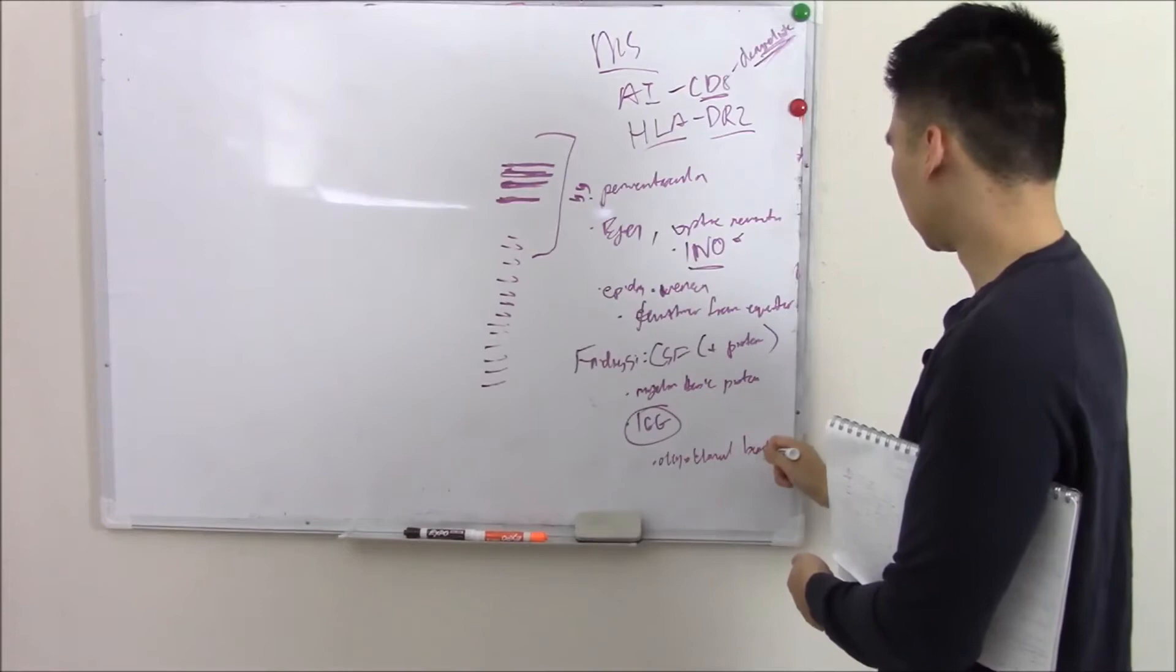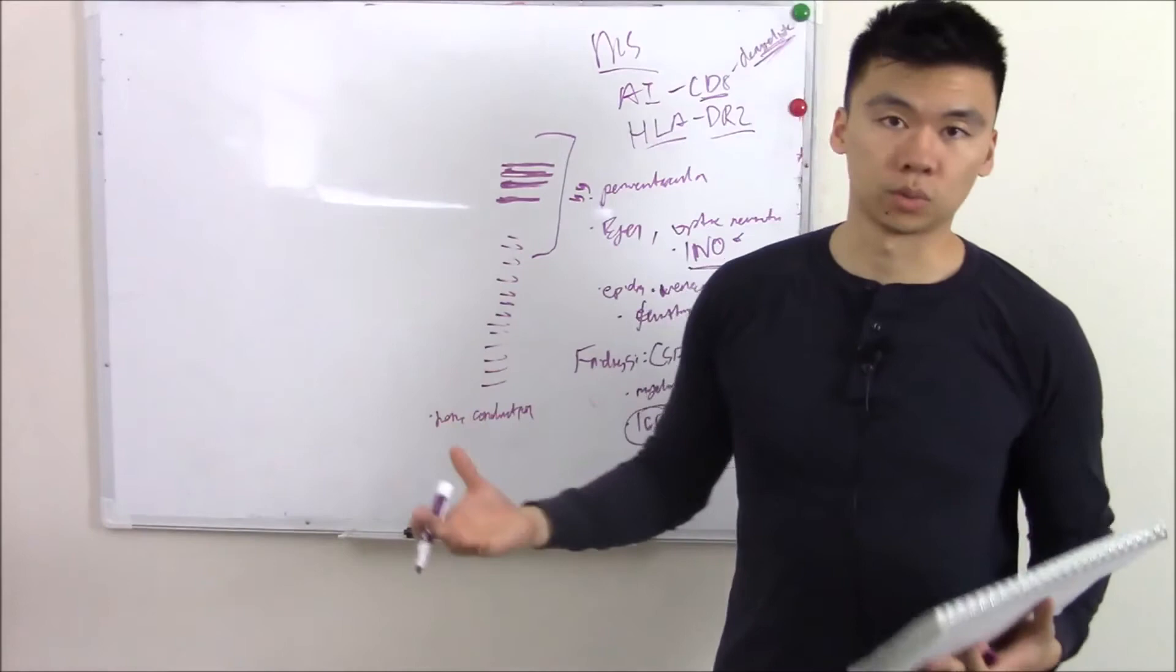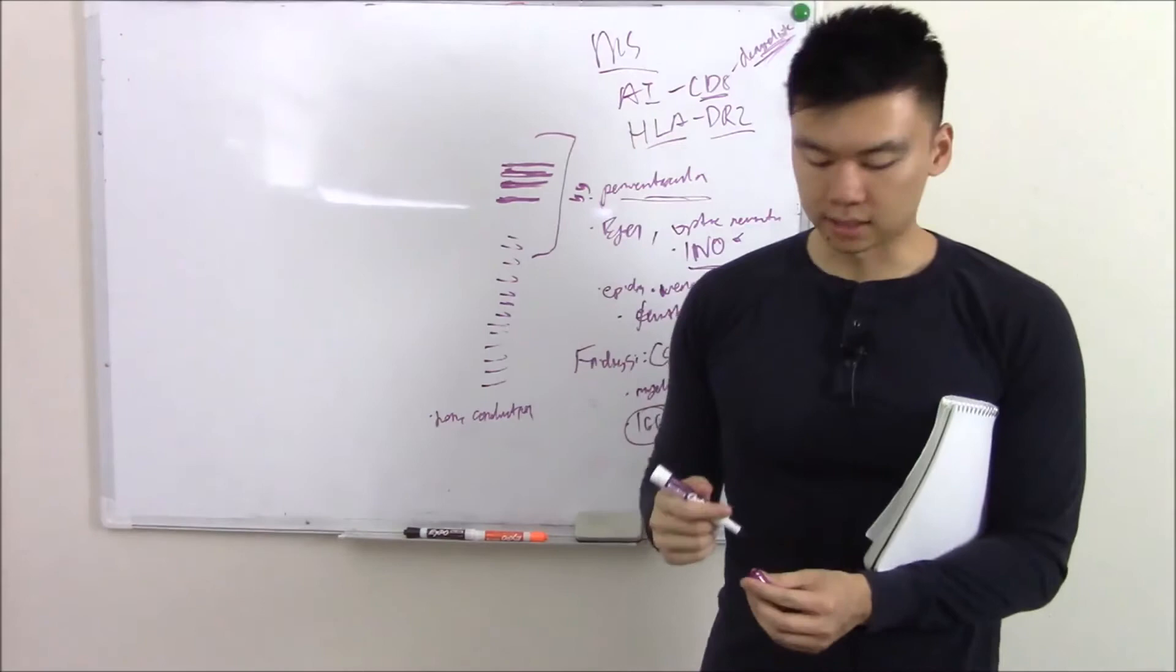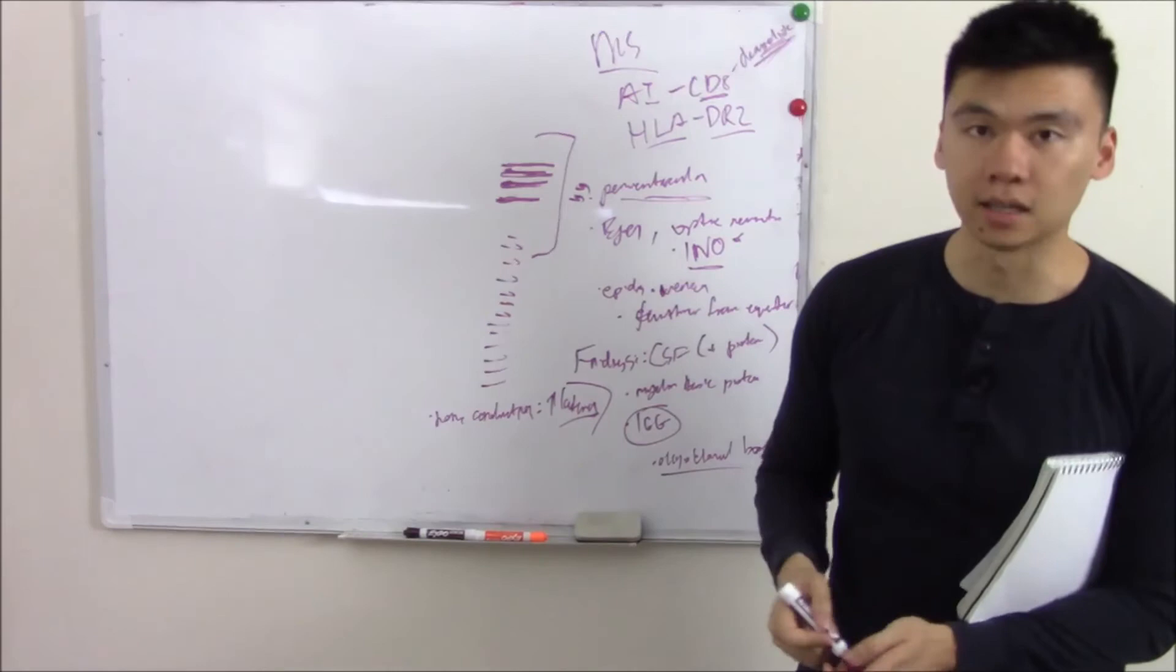If you do a nerve conduction study, basically seeing how fast your nerves conduct, it seems to affect your brain more, so it doesn't affect your peripheries as much. Peripheries will be normal. But it likes to affect your brain, especially periventricular, so CNS-wise the nerve conduction is going to be slower—sometimes we say increased latency. It makes sense because it's demyelinated. Myelin is what helps your nerves conduct faster, so it makes sense to be slower.